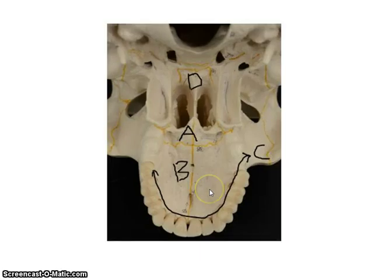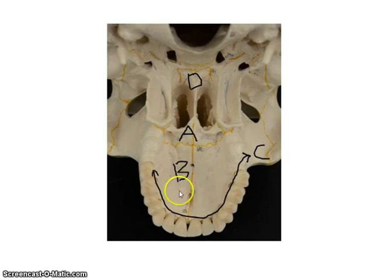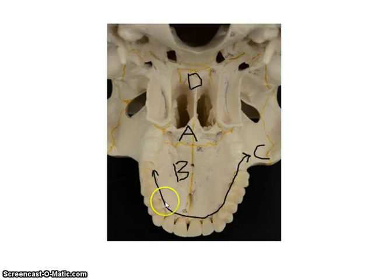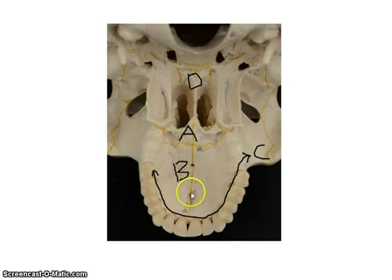Now we're looking from the inferior view looking up towards the teeth. Here you have the maxillary bone, but this specific area — the top of your mouth — is actually the palatine process of the maxillary bone. Back here in the back of the top of your mouth is the palatine bone. Back here you have the vomer. And in the maxillary bone, these are the alveoli.